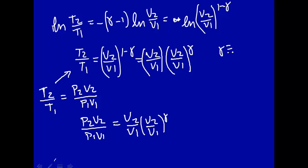V2 over V1 raised to the negative gamma. Remember, gamma is defined as a ratio of heat capacity, that's going to be cP over cV.